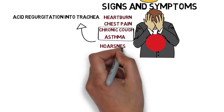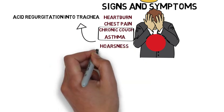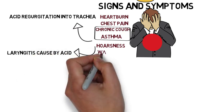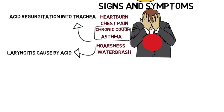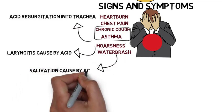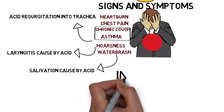Number five is hoarseness of voice. It is due to laryngitis caused by acid. Number six is water brash. Water brash is basically excessive salivation caused by acid. Now let's discuss the investigations in GERD.